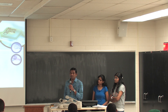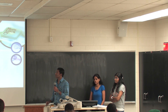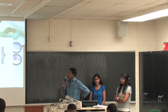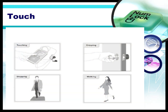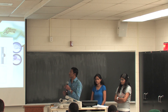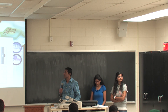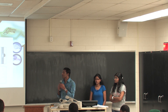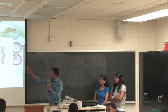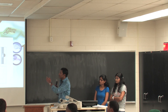Speaking about the features of RedTacton, some of the basic features are: touch, broadband, and interactive, and they are useful for any media. For touch: communication can be made by a simple touch or just by standing nearby. Touching, gripping, stepping, and walking can all act as triggers that turn communication on and off whenever the action is performed. The RedTacton device is held in one hand — it may be a computer or a mobile — and the other device is there. Just by touching, whatever action you need, you will get easily.